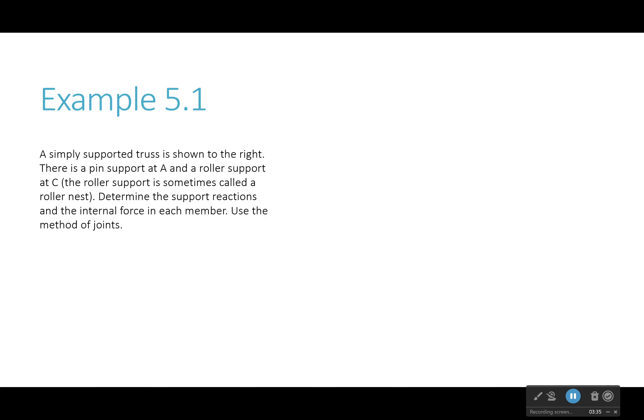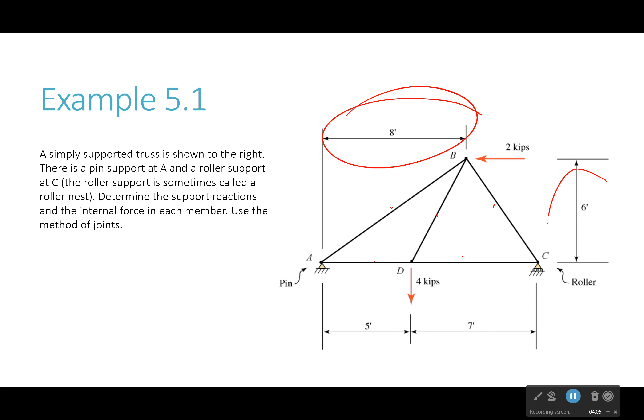So this example 5.1 in your textbook, it's not a very difficult truss. It's only got five members, and we'll see what the forces in the members are. So let's read that. A simply supported truss is shown on the right. There's a pin support at A, and a roller support at C. We want to determine the support reactions and the internal force in each member. We're going to use a method of joints. Now, these links are important because these are how we're going to get our angles. You don't necessarily need angles. What you need is ratios a lot of times, and that will help you. You can figure out the slope from this. The slope of this line right here is 4 over 6.